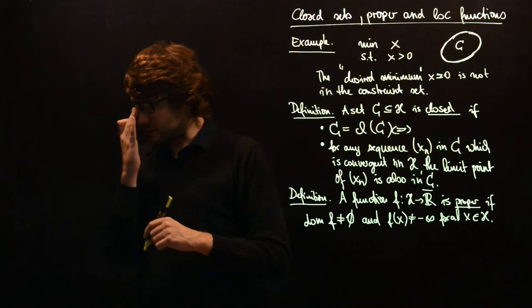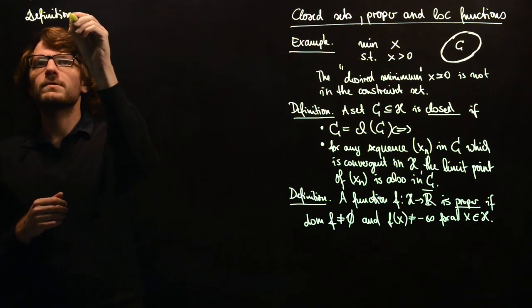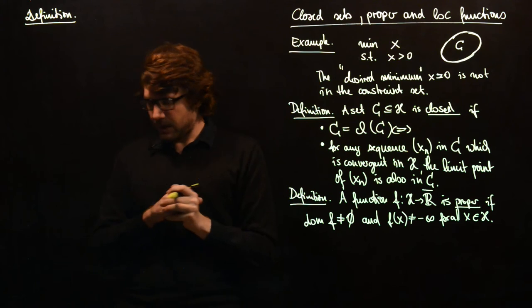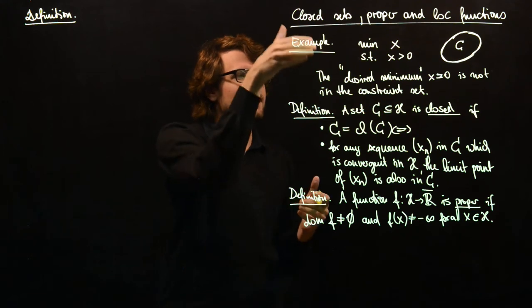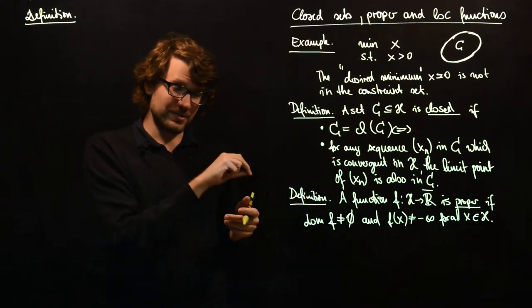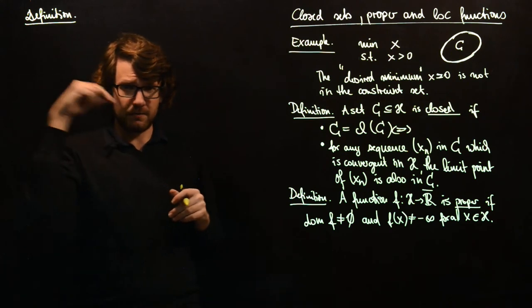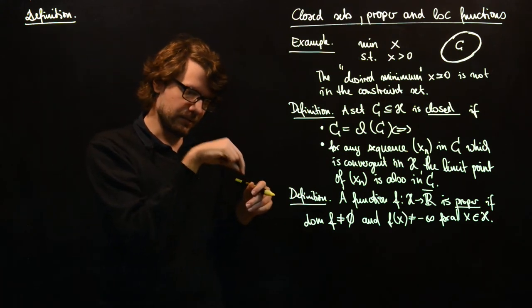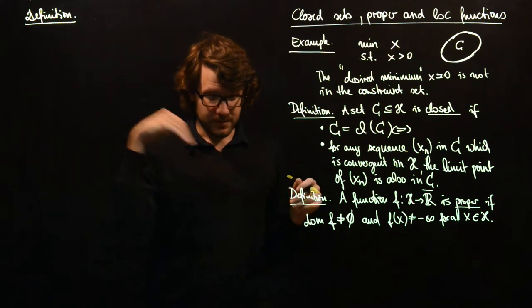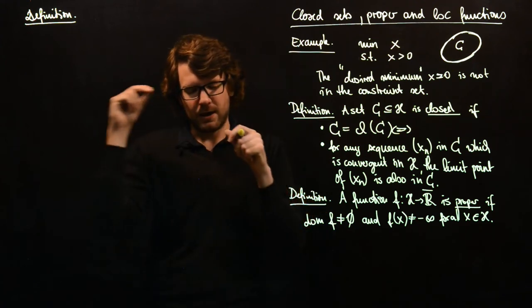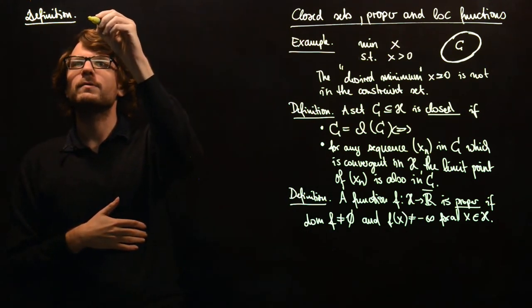Now let's come to lower semi-continuity, which might be a bit new to some of you. What we want to make sure, analogously to this example, is whenever we converge, we don't just by passing through the limit jump upwards. So whenever we converge, we want the limit point to have at least as good a function value as we would expect from the sequence of function values at this sequence.